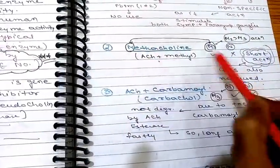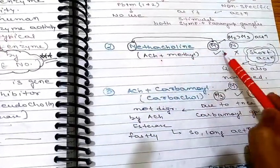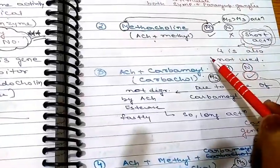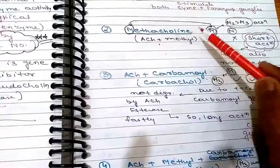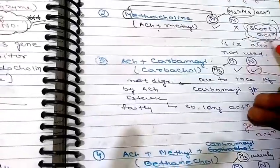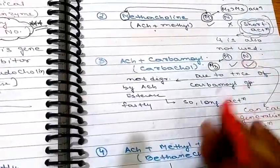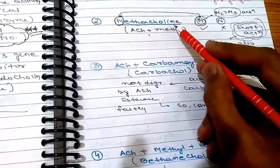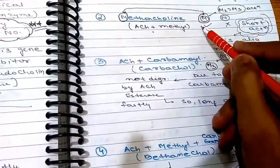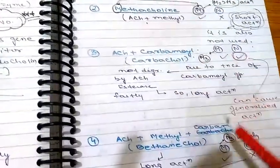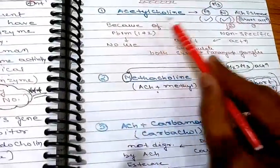The next ester is methacholine. It stimulates only muscarinic receptors and will not stimulate nicotinic receptors. However, it is also degraded very rapidly by acetylcholinesterase, so it also has a very short action and is not used clinically. One important point: methacholine acts mainly on M2, whereas drugs like carbachol, pilocarpine, and bethanechol act mainly on M3.